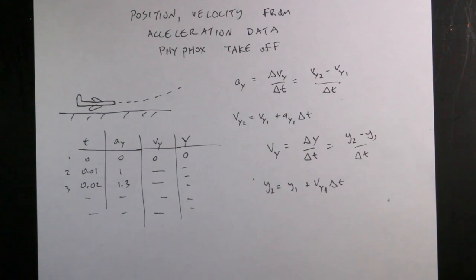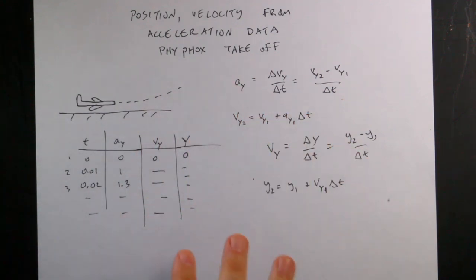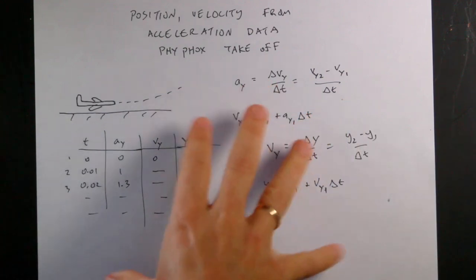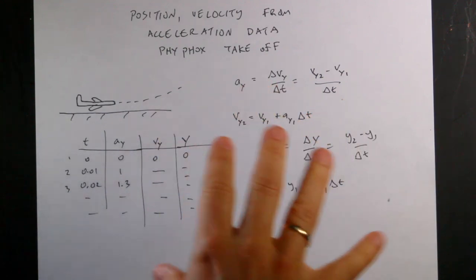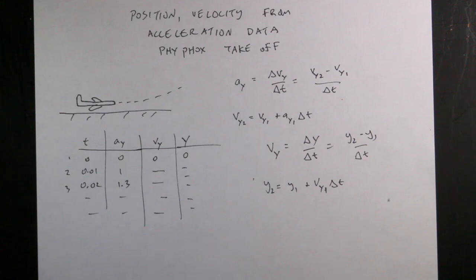Now the problem is that I'm not really great with Python. I normally use GlowScript Web vPython, but now I have to take data from a spreadsheet. I want to do this in Python — make a graph of acceleration versus time, then velocity versus time, then position versus time. And then I want to animate the motion in Python and leave a trail to show what happened when we took off.